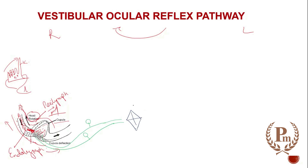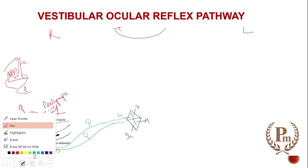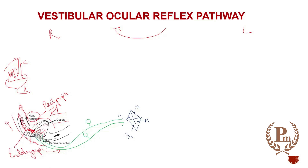The vestibular nucleus is a collection of four nuclei: the superior nucleus, the medial nucleus, the lateral nucleus, and the inferior nucleus. The vestibular fibers responsible for the vestibulo-ocular reflex are going to go to the medial side.